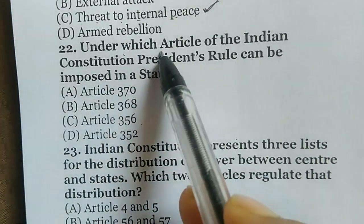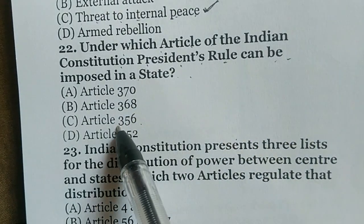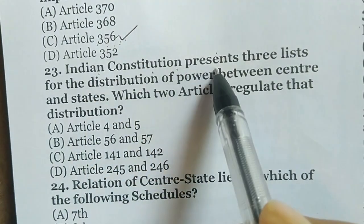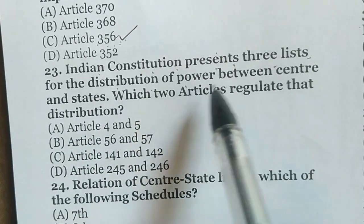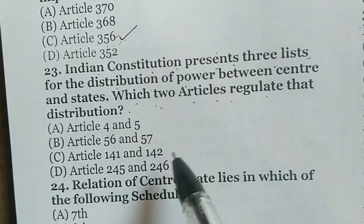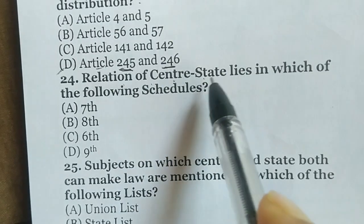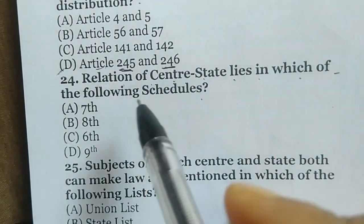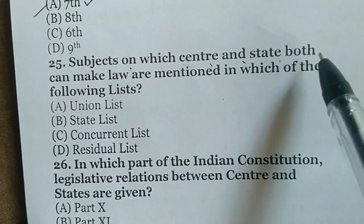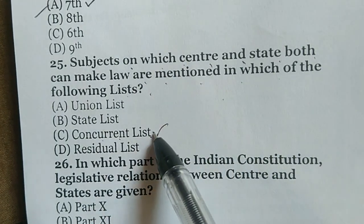Under which article of the Indian Constitution can President's Rule be imposed in a state? The correct answer is Article 356. The Indian Constitution presents three lists for the distribution of power between the Centre and states — which two articles regulate that distribution? The correct answer is option D — Articles 245 and 246. Centre-state relations lie in which schedule? The correct answer is the Seventh Schedule. Subjects on which both Centre and state can make law are mentioned in which list? The correct answer is the Concurrent List — option C.